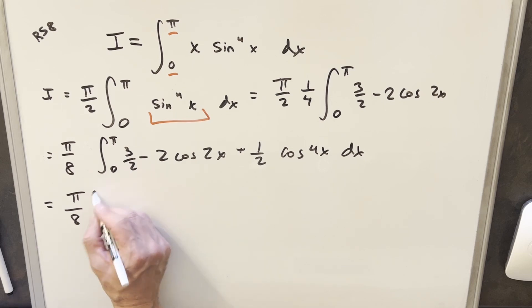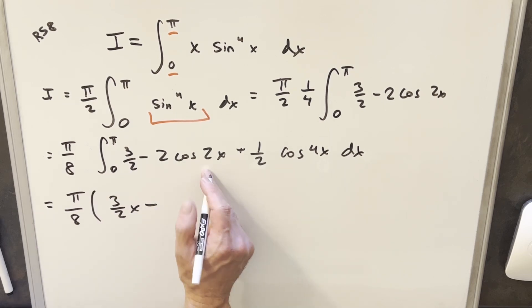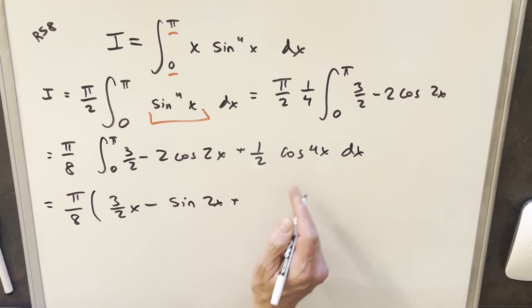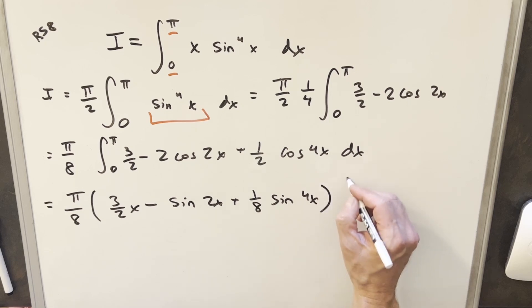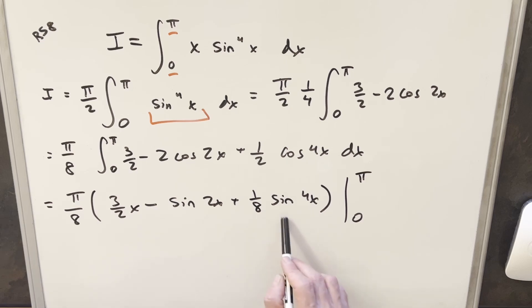So just integrating three halves, we're going to have three halves x. Then integrating here, we're going to pull a two out in the denominator, so this is just going to be sine of 2x. And then here we need to pull four out, so we end up with one over eight sine of 4x. And this is all evaluated from zero to pi. And from here, you can see that when we plug zero in, this whole thing is going to be zero. Every term is going to be zero.